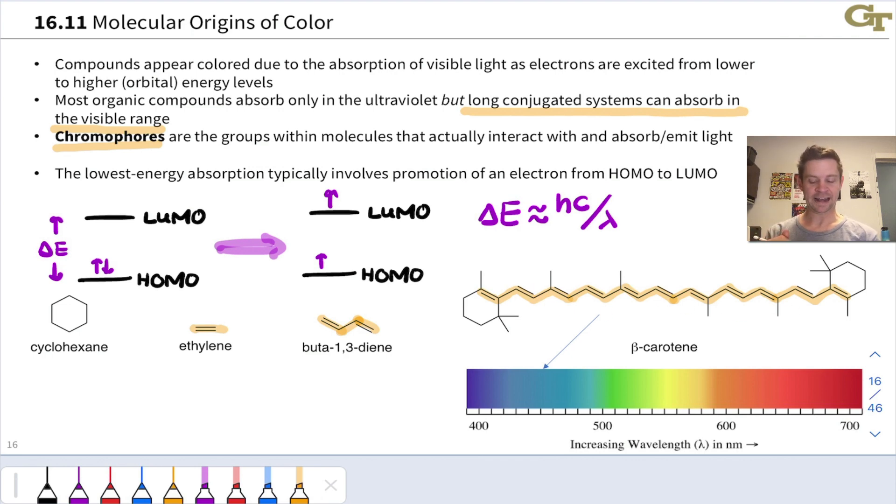And what we notice is that ethylene, butyl-1,3-diene, and cyclohexane, which is way over here on the left and is a fully saturated system with no double bonds, these guys absorb in the ultraviolet range of the spectrum, which is a relatively high energy photon.